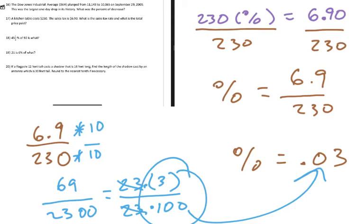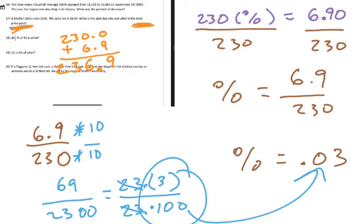The second part asks for the total price paid. You paid $230 plus $6.90, which gives $236.90. It goes to show that even when a question looks complicated, it can be quite simple. You don't see too many questions like this on final exams or my tests, but you do see this in future classes all the time, so knowing this is very important.